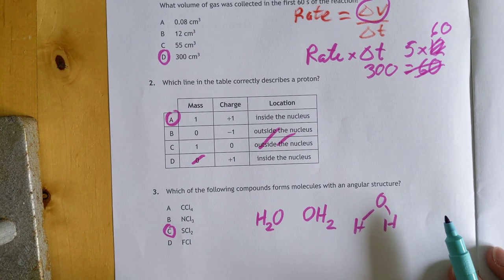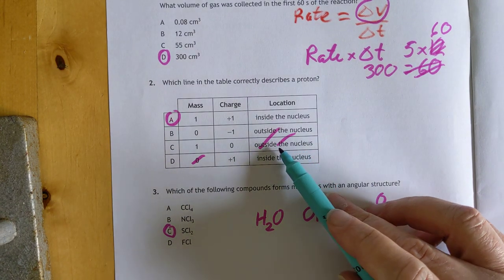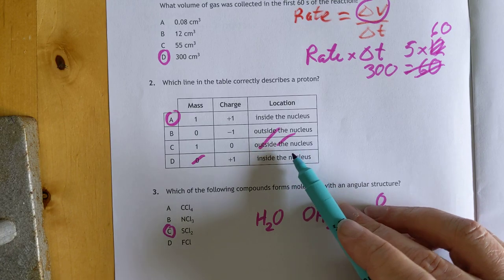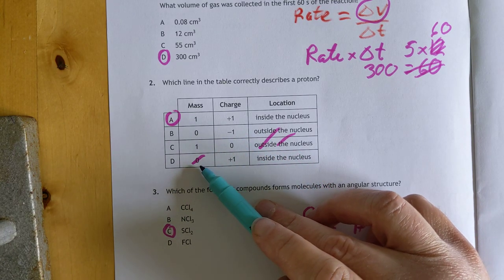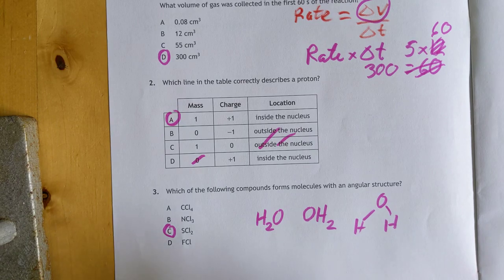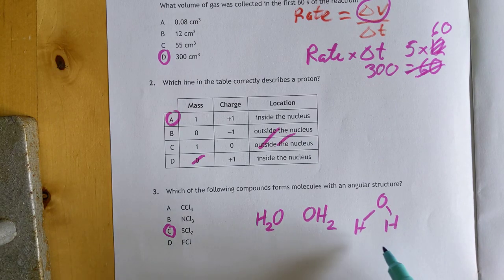Which line correctly represents a proton? These two are wrong because protons are inside the nucleus. This one is wrong because protons have a mass of one. So the answer is A.